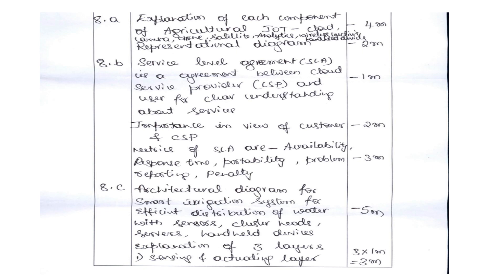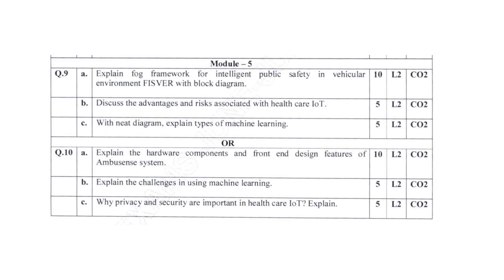For 8A, components of agricultural IoT: a diagram of the components carries two marks and explanation carries four marks, totalling six marks. For 8B, service level agreements: definition and where SLA is used carries one mark, importance of SLA carries two marks, and matrices of SLA — availability, response time, portability — explained in detail carries three marks. For 8C, the architectural diagram for the smart irrigation system: drawing the diagram carries five marks and explanation of each layer carries three marks, totalling eight marks.